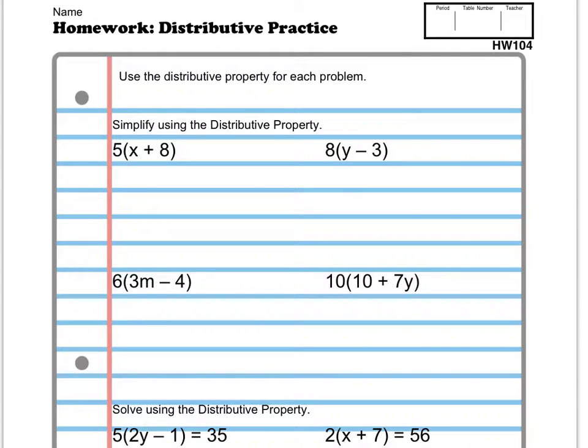So just looking at this, we won't actually be able to figure out what y is. So we just need to distribute 10 to each of these terms to simplify it. And then we're done with that problem. Okay, so I'm going to distribute 10 into each of the terms inside the parentheses. So I get 10 times 10 plus 10 times 7y.